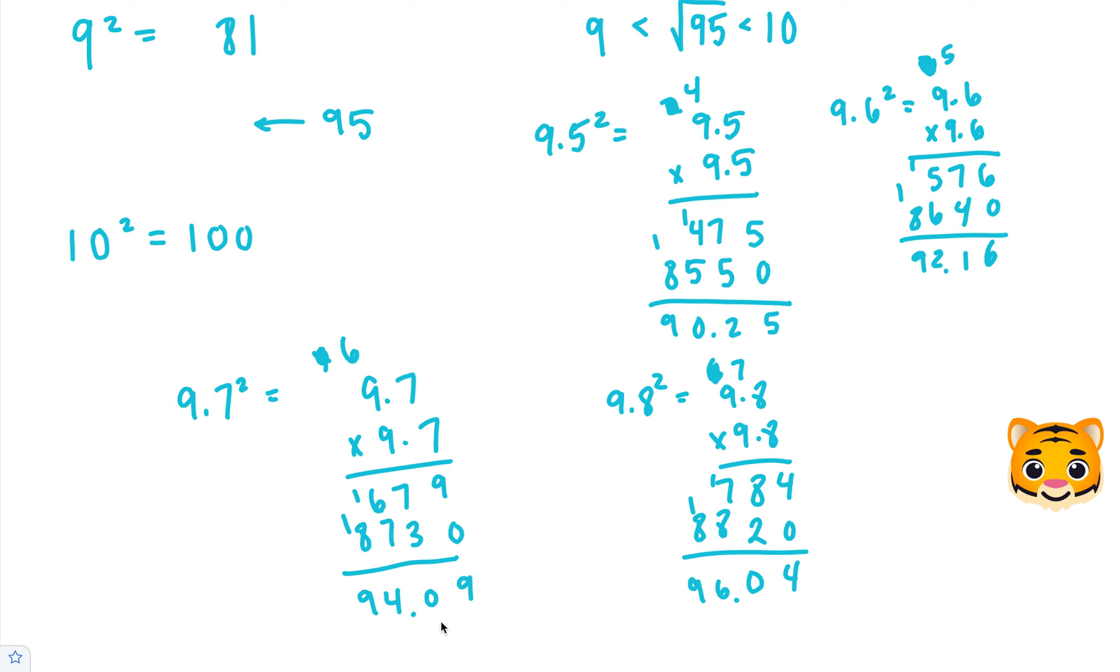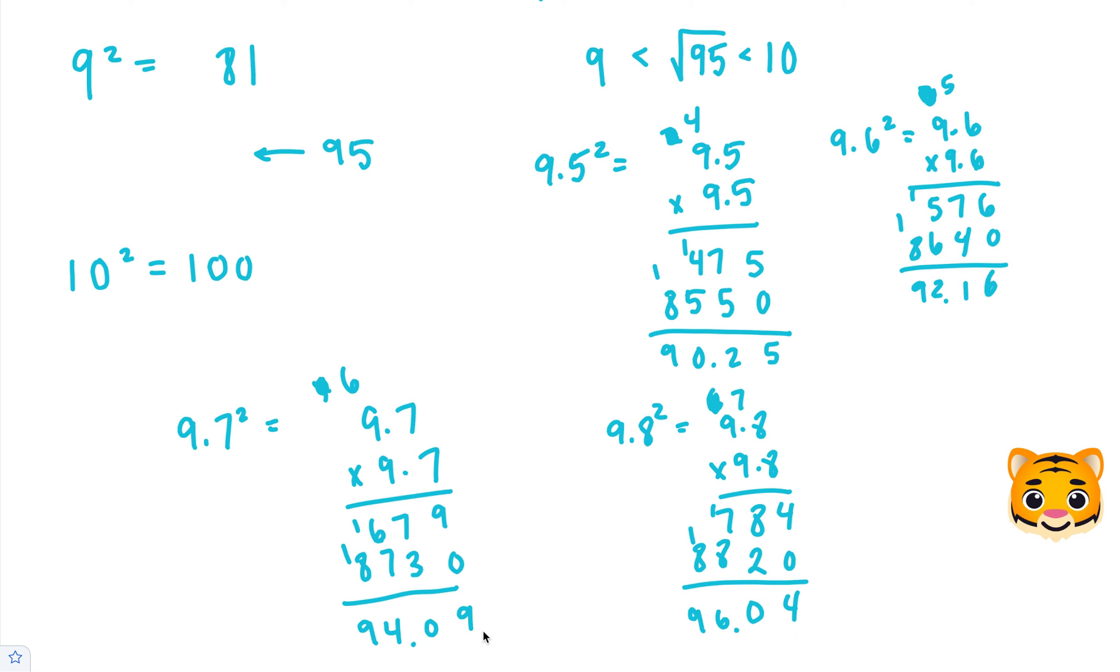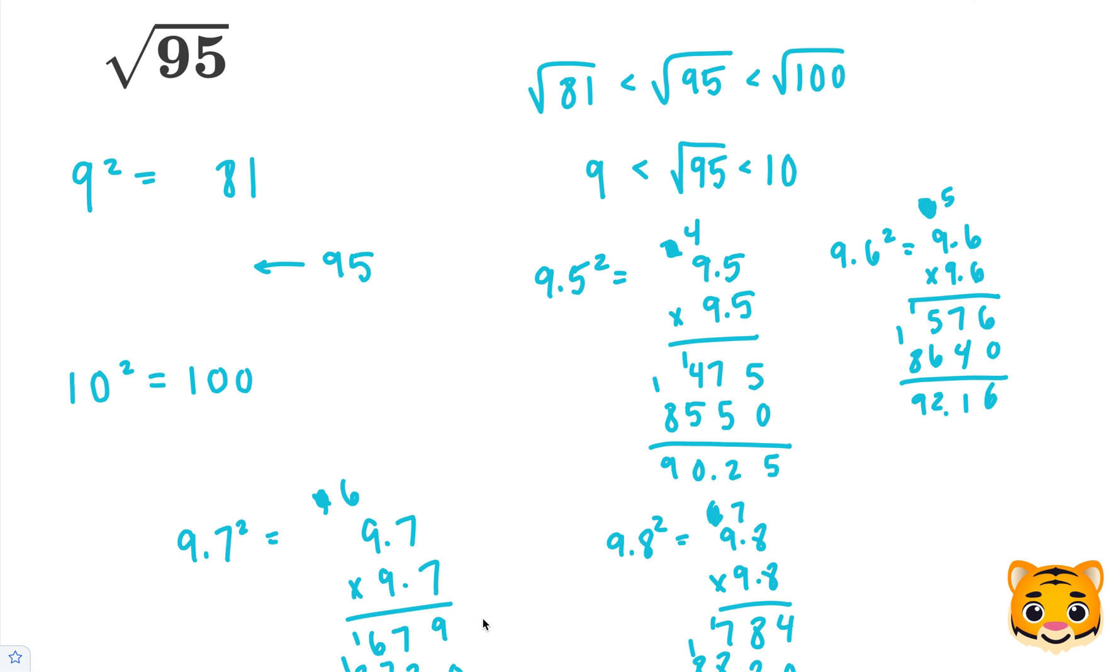So we can see that 94.09 was closer. Because 94.09 was closer, 9.7 squared gave us the closest thing to 95. So we can say 9.7 squared gives us approximately 95. The square root of 95 is therefore approximately 9.7.